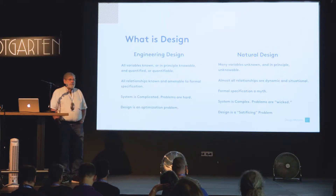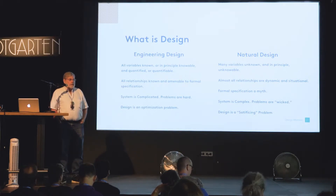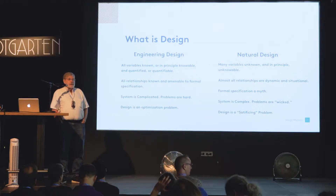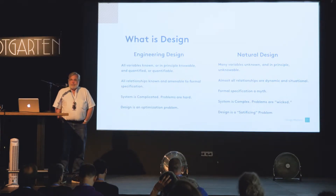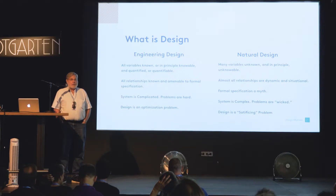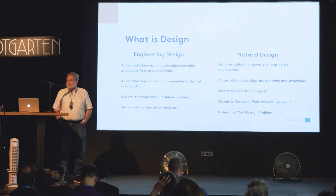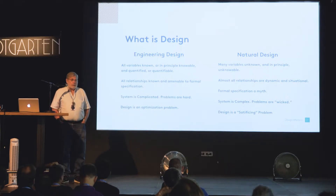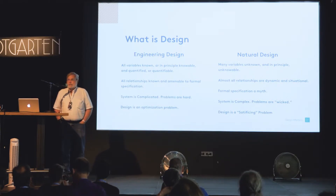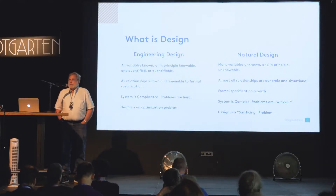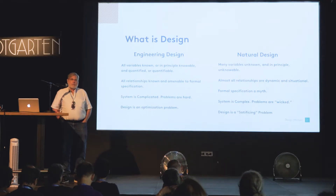In engineering design, all of your variables are known, or at least in principle knowable. Ernst Mach once said that if he knew the current position and vector of every atom in the universe he could tell you exactly what the universe would look like in a thousand years — because according to deterministic rules you could predict exactly where they would be. All these variables have to be quantifiable, all the relationships among them are known, and all are amenable to some formal statement — E equals MC squared kind of formal statement.